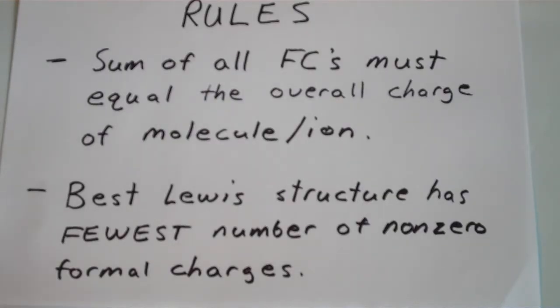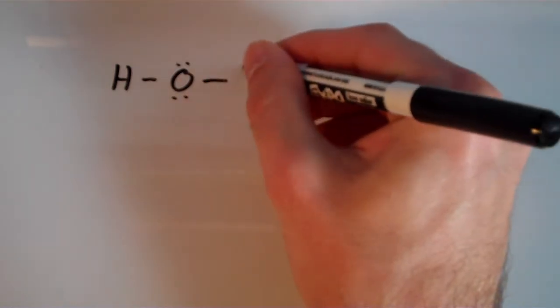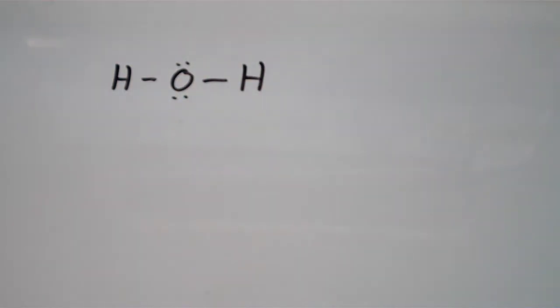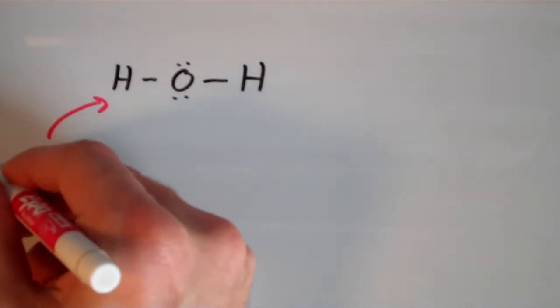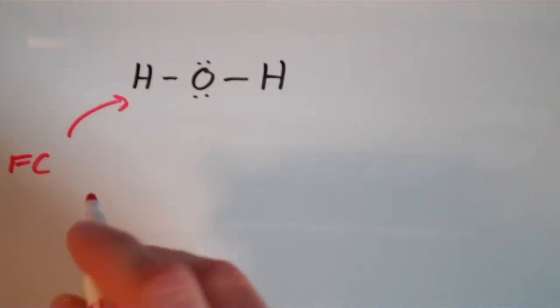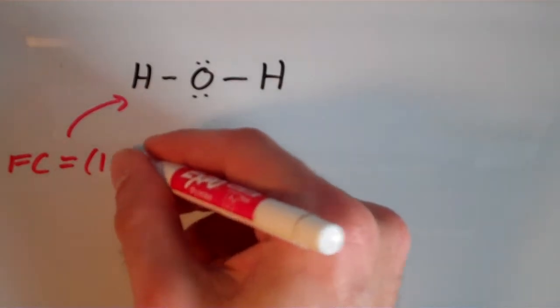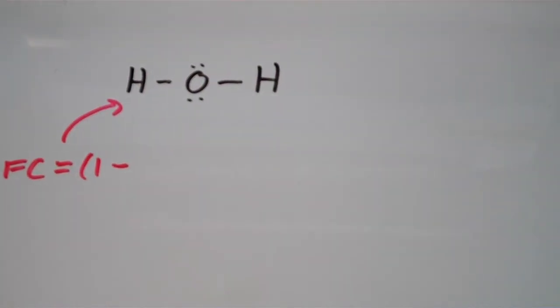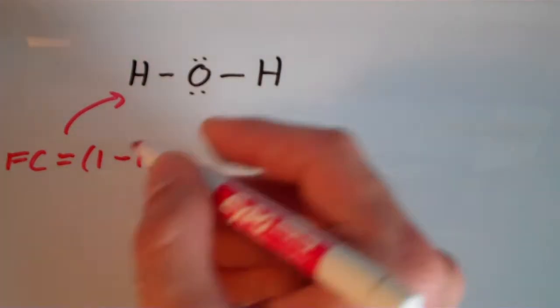Let's calculate some formal charges, starting with water. For hydrogen: the formal charge equals the number of valence electrons, which is one since hydrogen is in group one, minus the number of formal electrons. Hydrogen has only one shared pair, so it's one electron per shared pair — giving one minus one, which is zero.